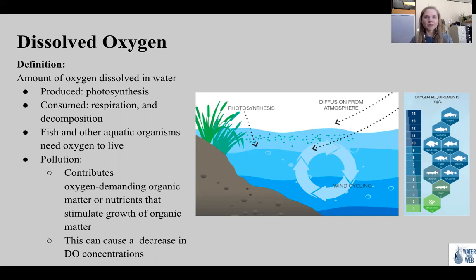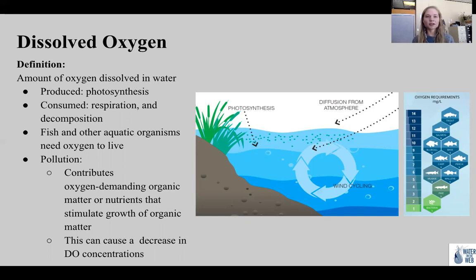Since photosynthesis needs sunlight, it only occurs during daylight hours. However, respiration and decomposition can happen 24 hours a day. Oxygen consumption is the greatest near the bottom of the lake where sunken organic matter accumulates and decomposes. Like terrestrial animals, fish and other aquatic organisms need oxygen to live. As water moves past fish gills, microscopic bubbles of oxygen gas in the water — called dissolved oxygen — are transferred from the water to their blood.